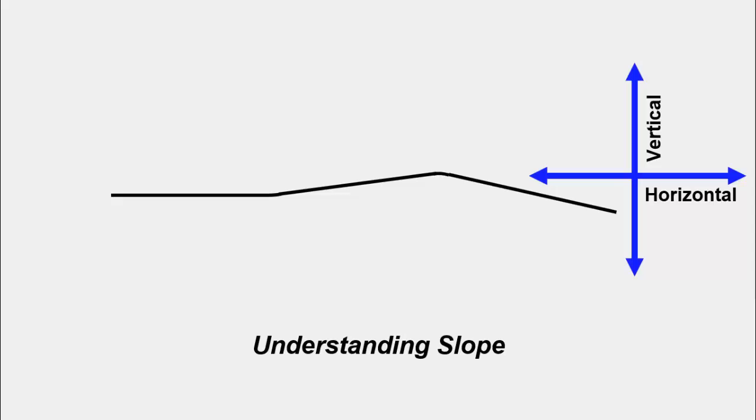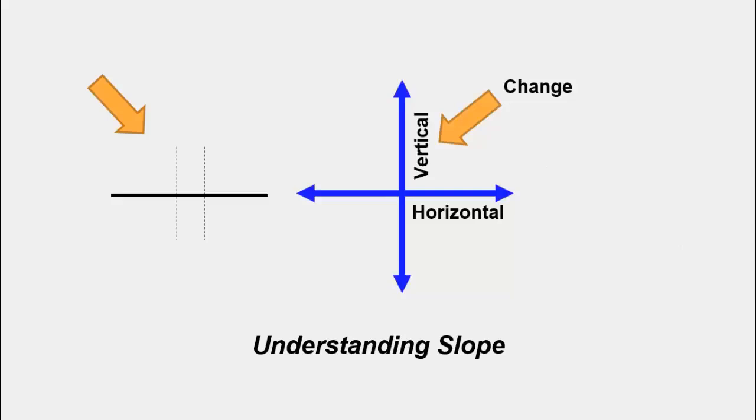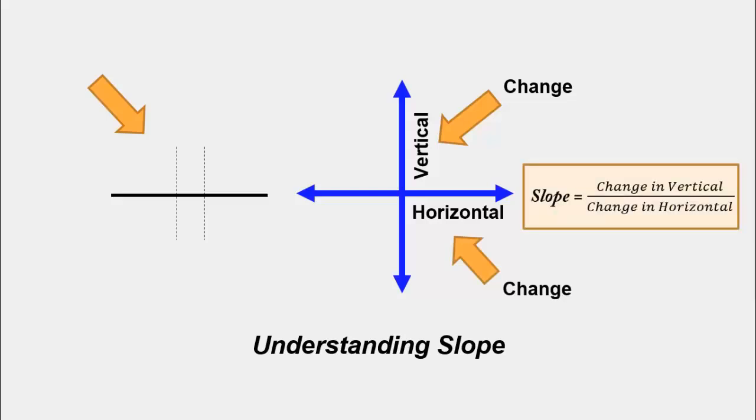To do that, the first thing to do is draw a vertical and horizontal axis as shown in blue. Now let's consider only the flat region. Let's pick a section of this road as shown by the dotted line. Now we look at the change in the vertical axis of this region. And then divide that by the change in the horizontal for that region. So there you have it. The slope is just the ratio of the change in the vertical to the change in the horizontal for that region, which is flat in this case.